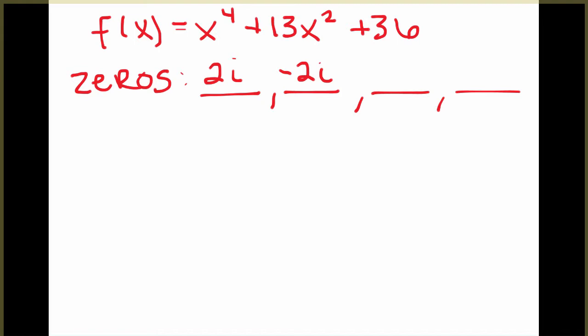When I look at the graph, I do not see any real zeros. So that just means these last two zeros here are also going to be imaginary. So what we'll have to do is we will have to divide by these factors that we have x minus 2i and x plus 2i in order to find the zeros, the remaining two zeros that we have here.